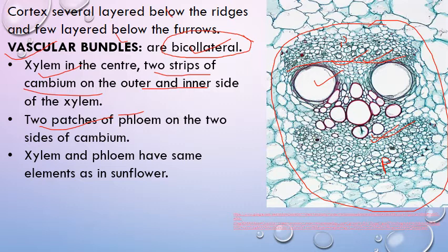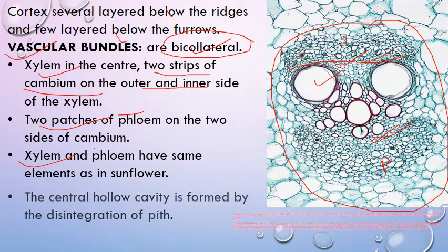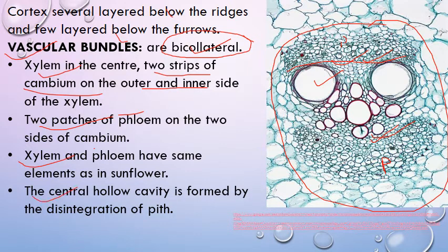Bicolateral means phloem is present on both lateral sides of xylem. Xylem and phloem have the same elements as in sunflower, but here there is an additional strip of cambium and phloem. The central hollow cavity — the pith — is found by disintegration of parenchymatous cells, so at maturity this central portion is hollow.